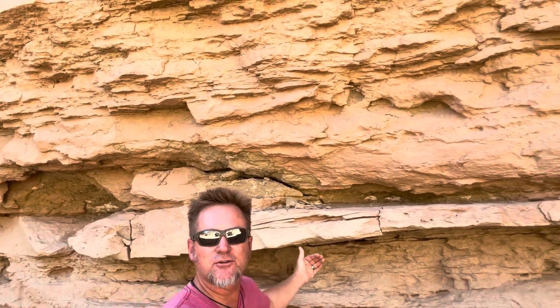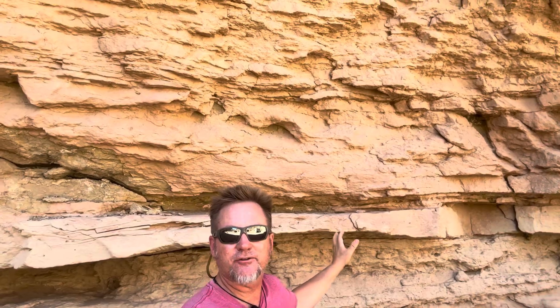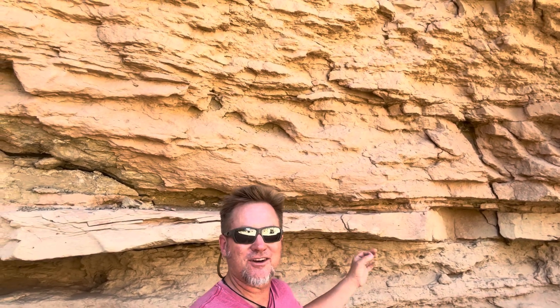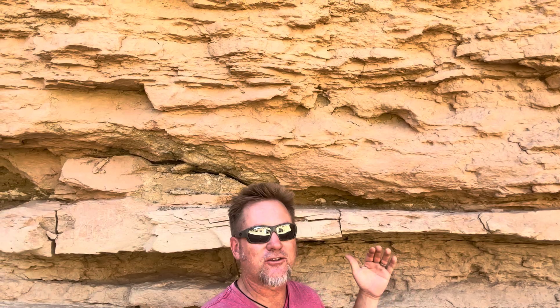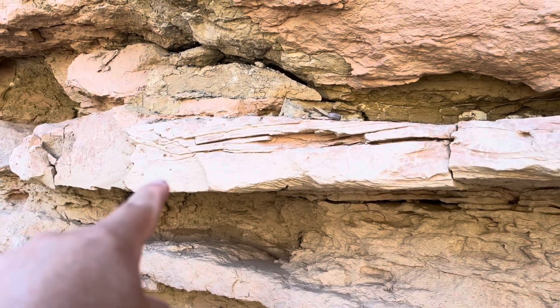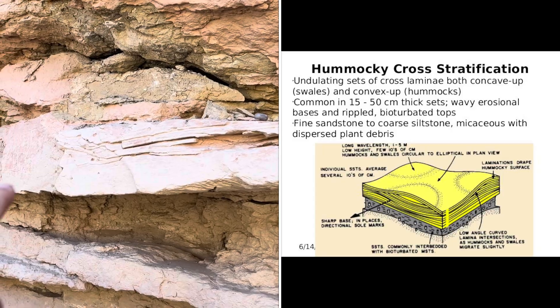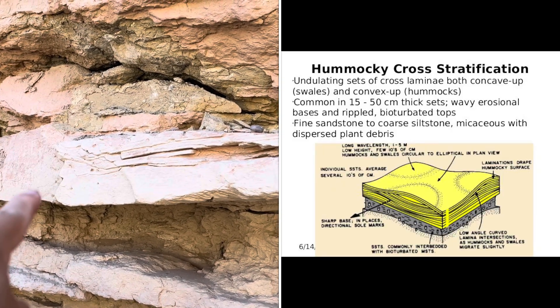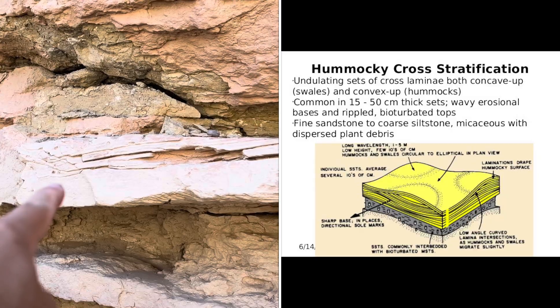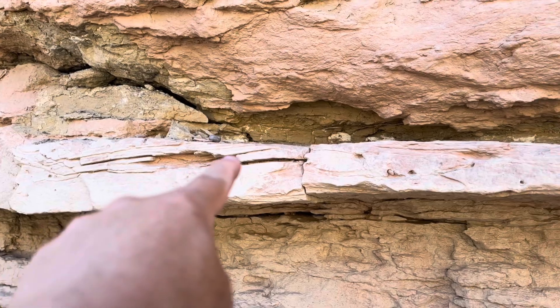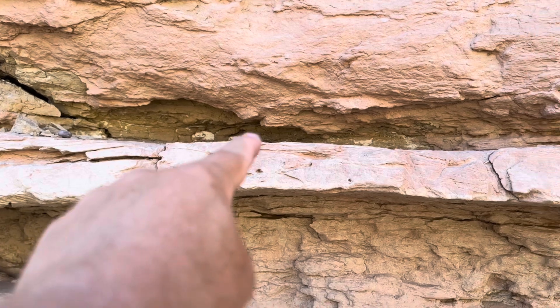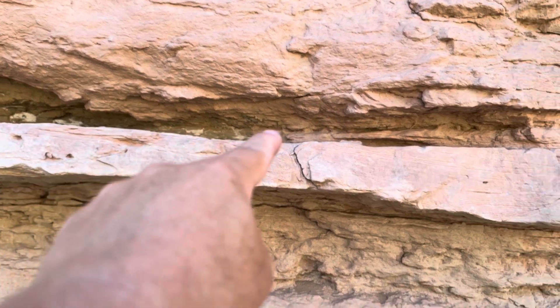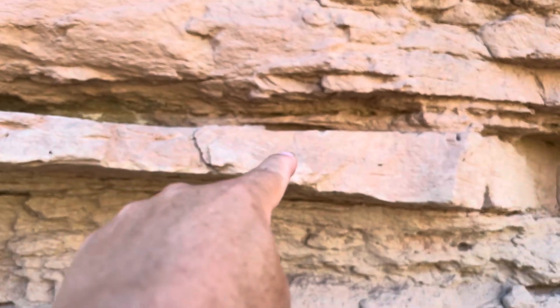I thought we'd start our discussion of hummocky cross-stratification with this absolute crowd-pleaser of a hummock behind me. On every field trip I've led out here, I always like to start people off with this one because it is a model, picture-perfect hummock with all the features that help us diagnose and identify these things when they're not so well preserved. It's got the scoured base representing the impact of the wave orbital on the bottom where it starts to rip up and rework sediment, and then those low-angle laminae that culminate in an arch top — that humpback hummocky top — and then it starts to dip back down on the other side.